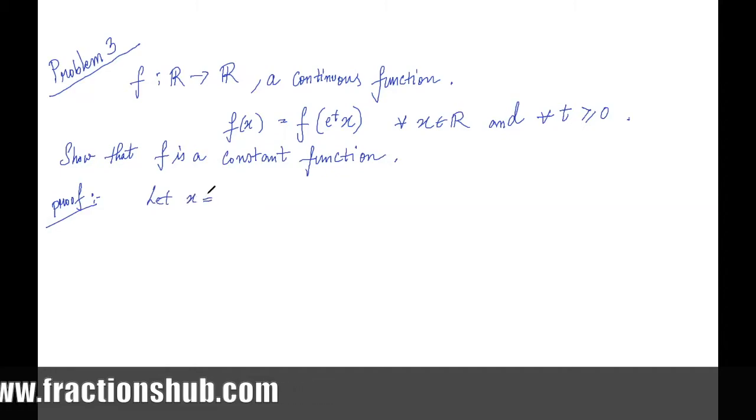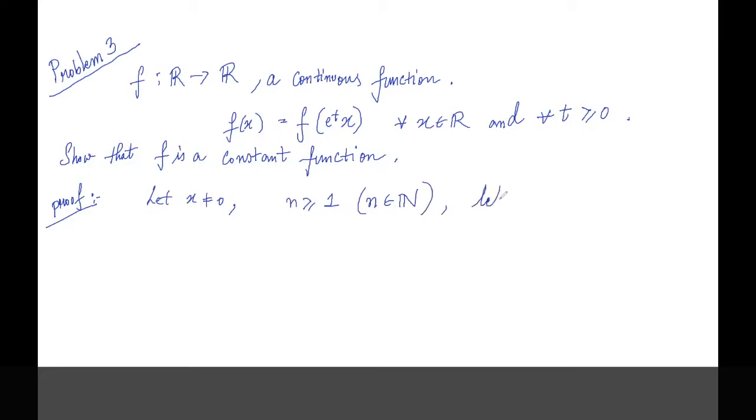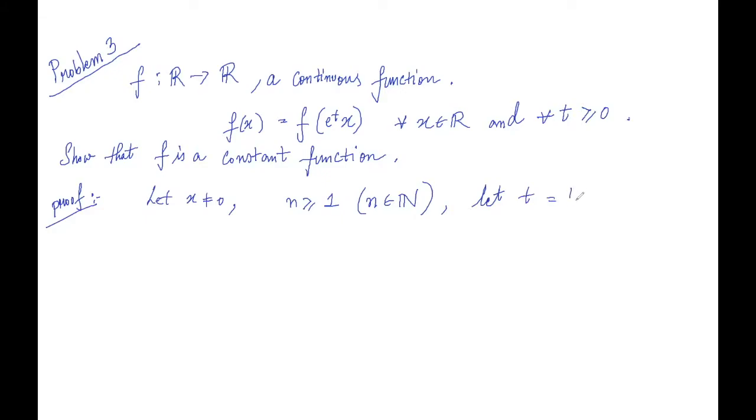That x not equals to 0. So I'm excluding this case because then it becomes f of 0. So for any natural number n greater than or equal to 1, we let t equal ln n. And this is greater than or equal to 0, as you know, since n is a natural number.